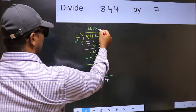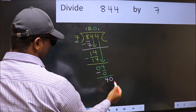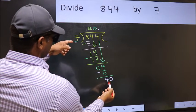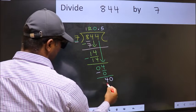So now you can put dot and take zero, so 40. A number close to 40 in seven's table is seven fives, 35.